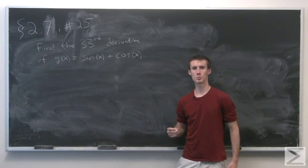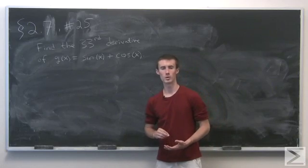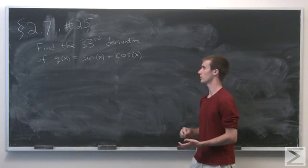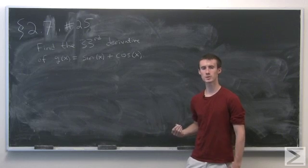Problem number 25 of section 2.7 asks us to find the 33rd derivative of the function g(x) = sin(x) + cos(x).